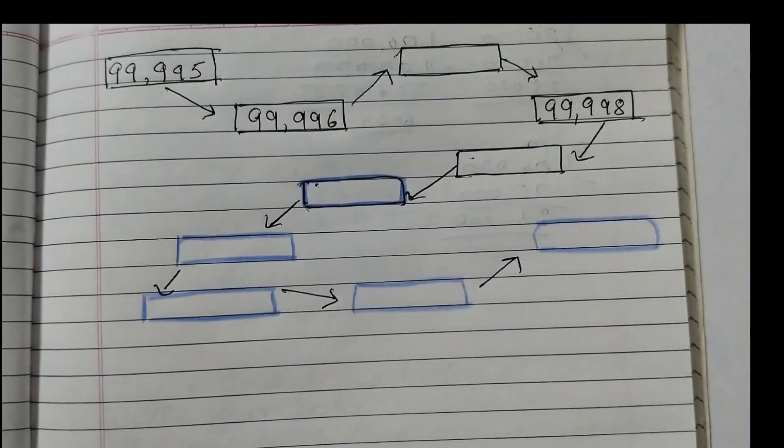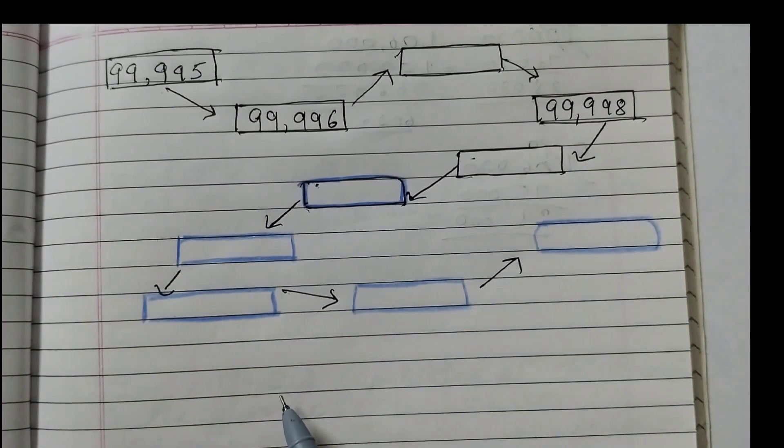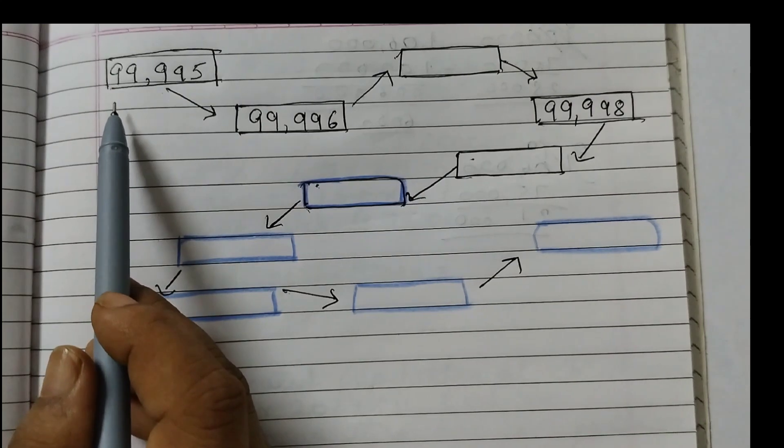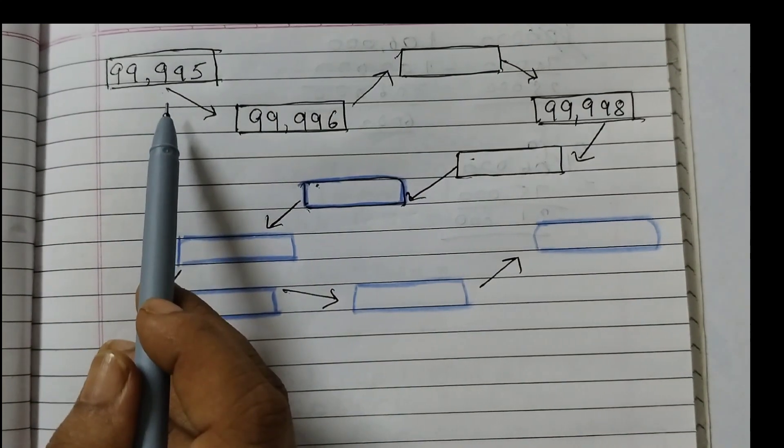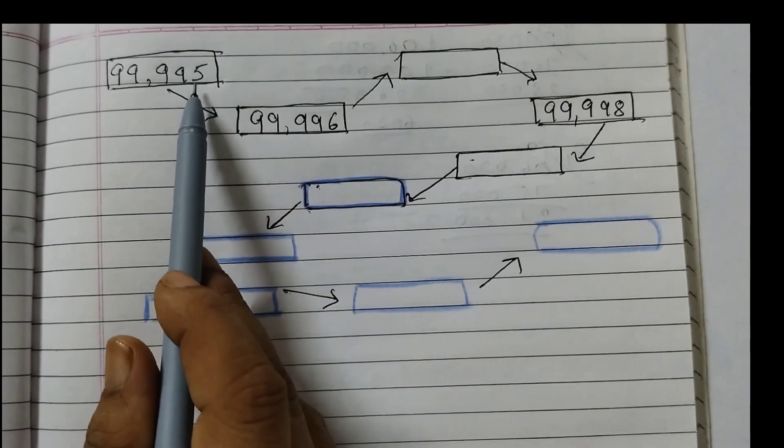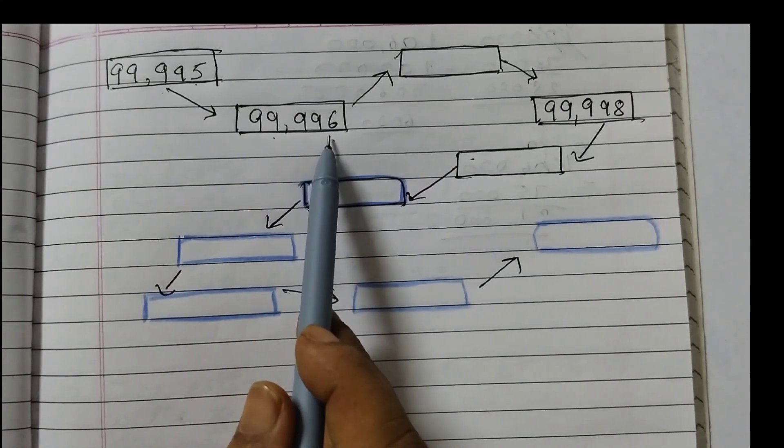The next pattern given is, we have these boxes. 3 of the boxes are filled up. And the rest of the boxes you need to fill up. So the first number given is 99,995. This is a 5 digit number. Then we add 1 to this. So 5 would become 6. 99,996.